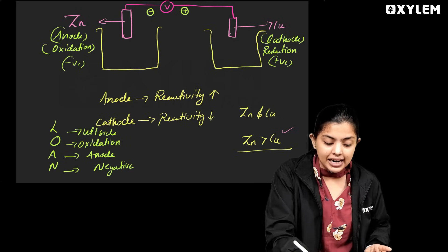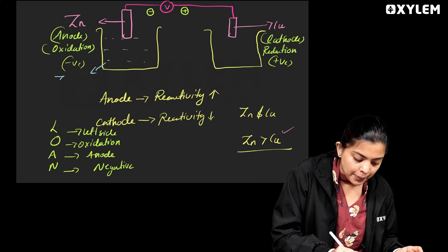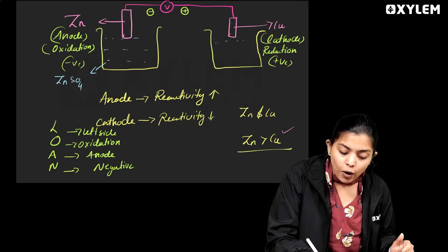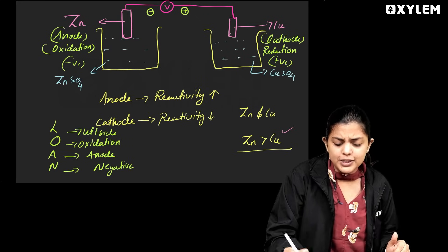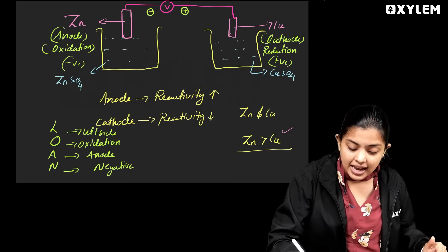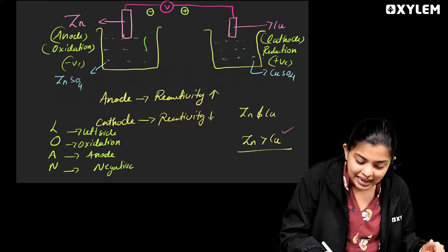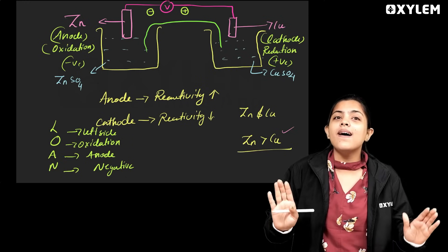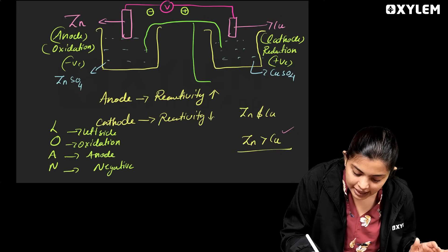Now we have the electrolyte. Copper in the presence of an agent — that means copper nitrate or copper sulphate. Now we have the electrolyte; this is very important. We have a salt bridge. We have a reaction involving the electrons. We have a salt bridge.